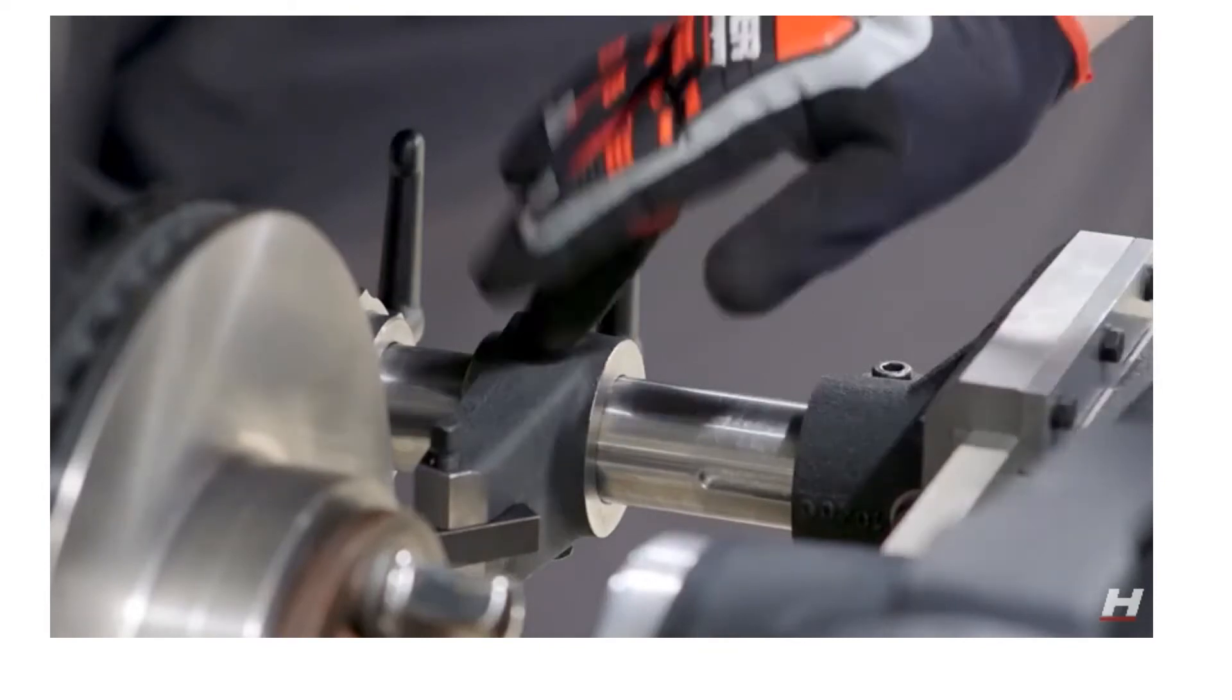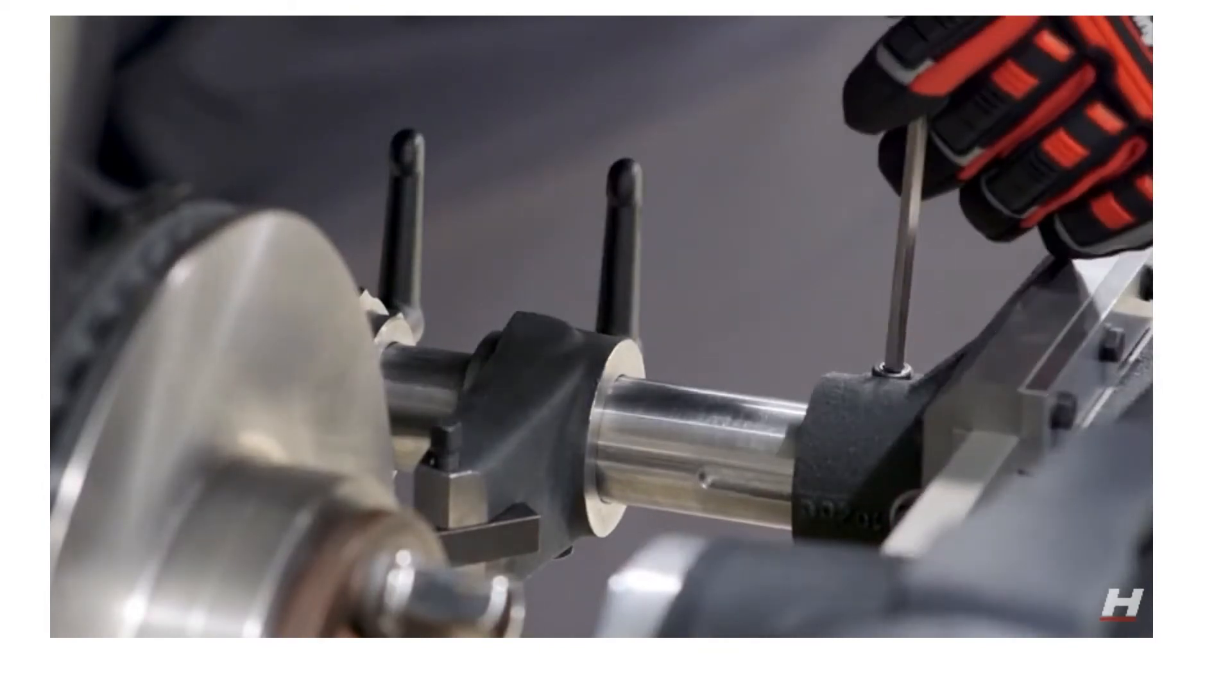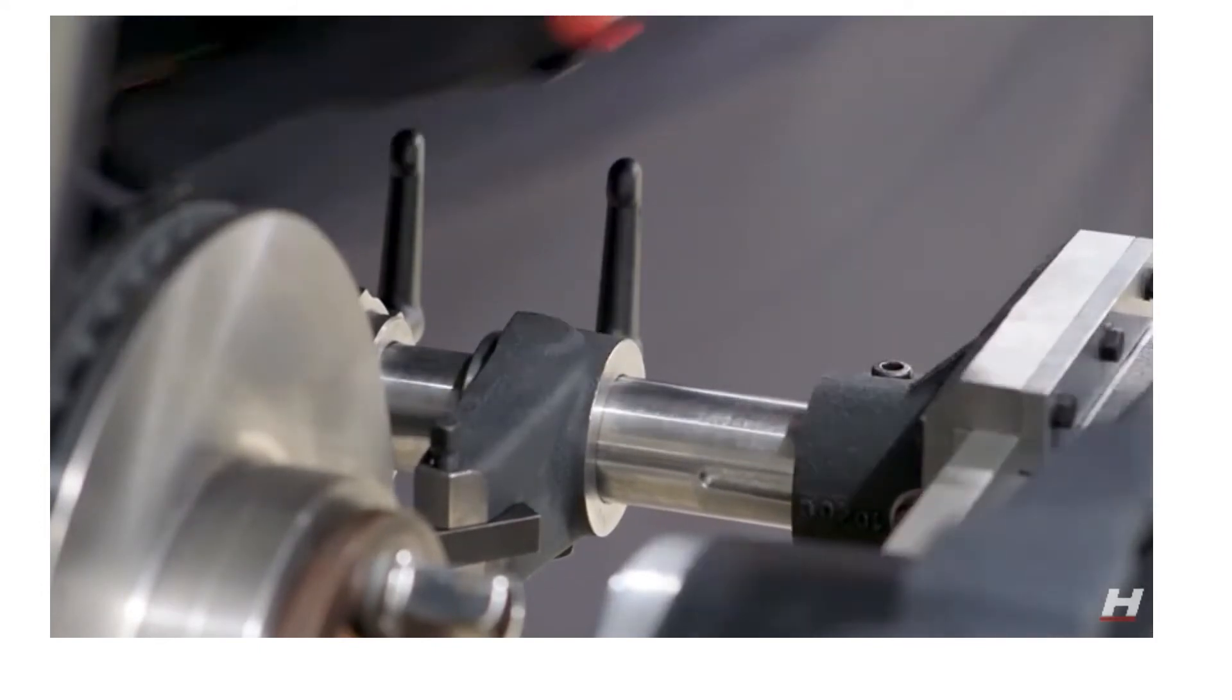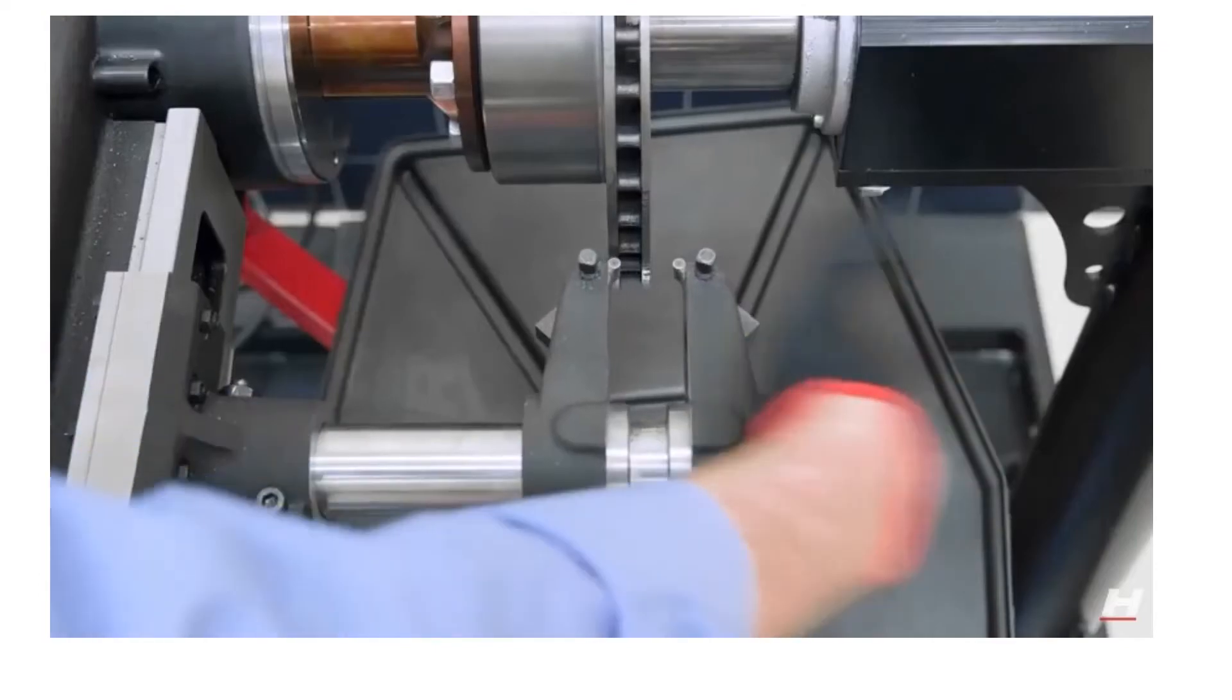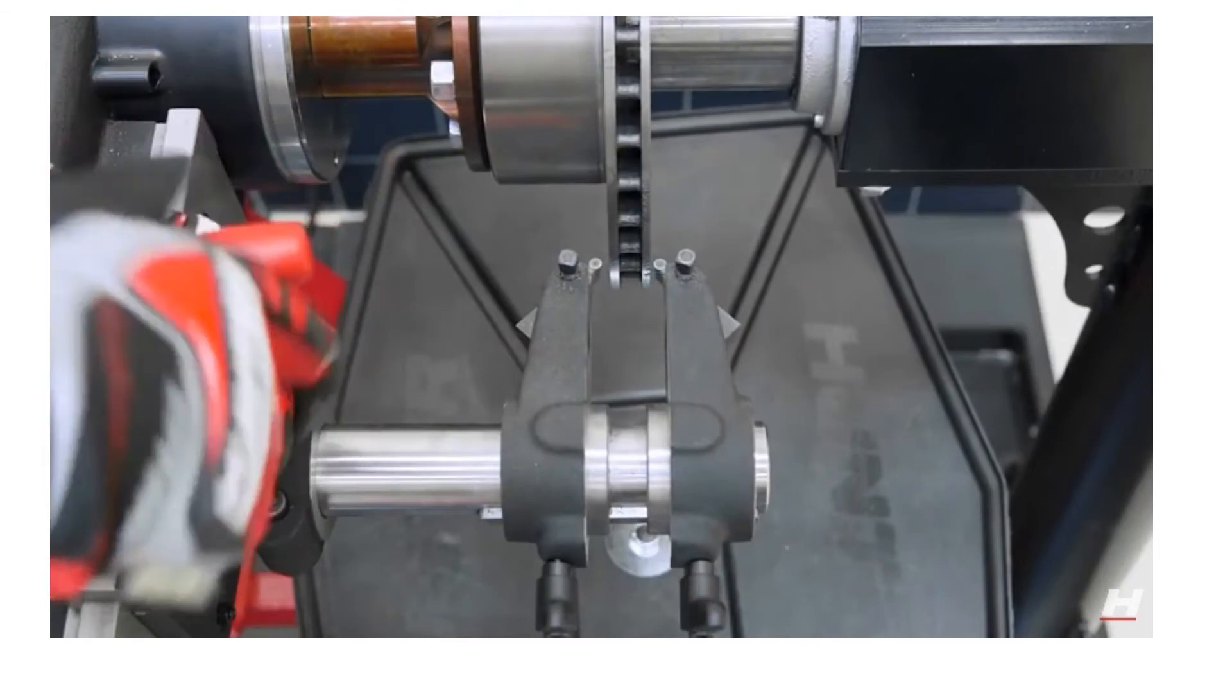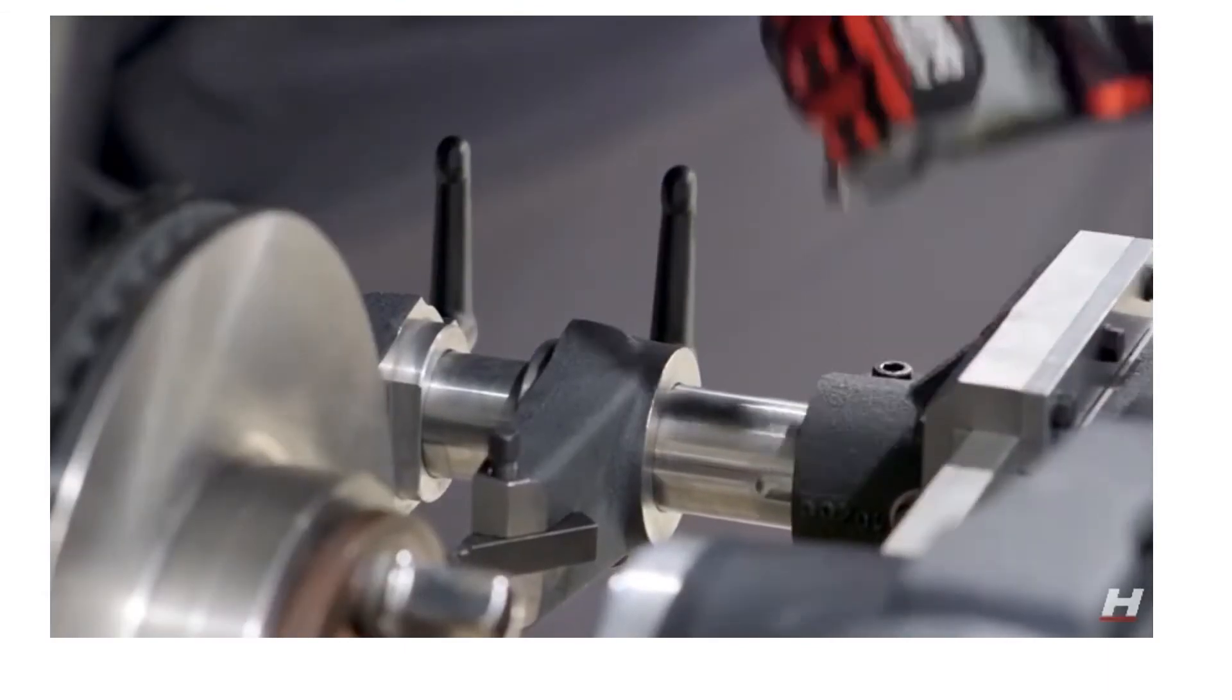Okay, now that the lathe is bolted up tight now we need to adjust our cutting heads. So I'm going to grab my t-handle wrench here. Loosen up this screw right here and that lets the head slide back and forth and I'm going to roughly center it about the rotor and tighten it back up.